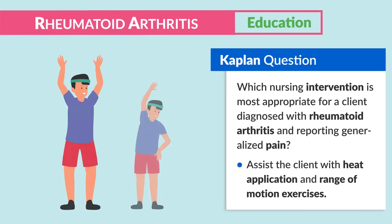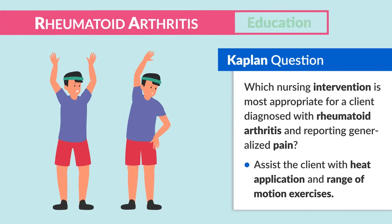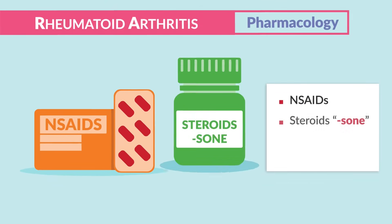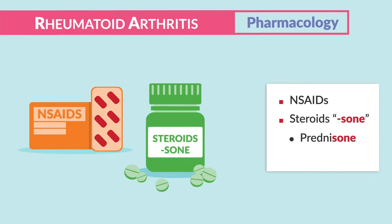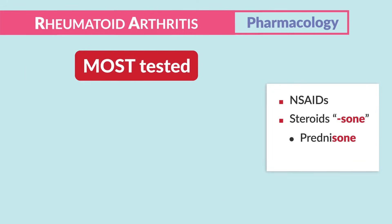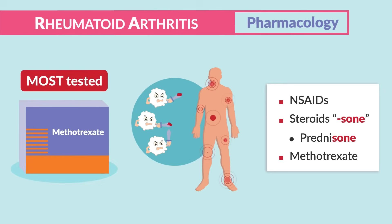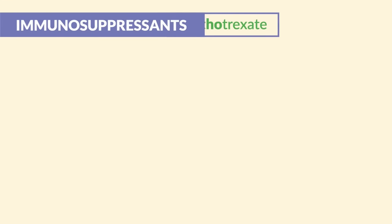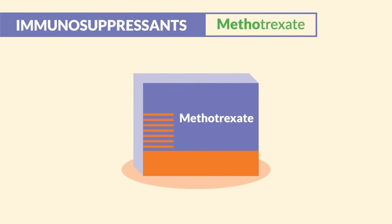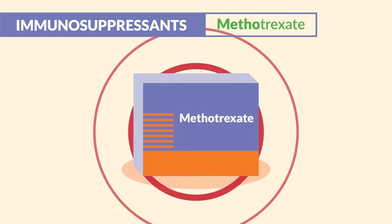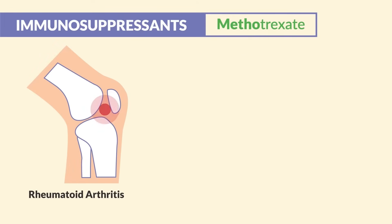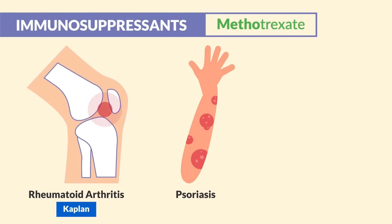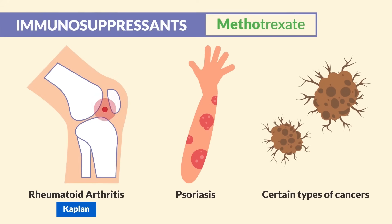For pharmacology, we can use NSAIDs and steroids like prednisone, both used to decrease swelling. The most tested drug here is methotrexate, given to help the body stop attacking itself. Methotrexate is the drug to know for NCLEX and exit exams — mainly given for rheumatoid arthritis, psoriasis, and certain cancers to slow growth.